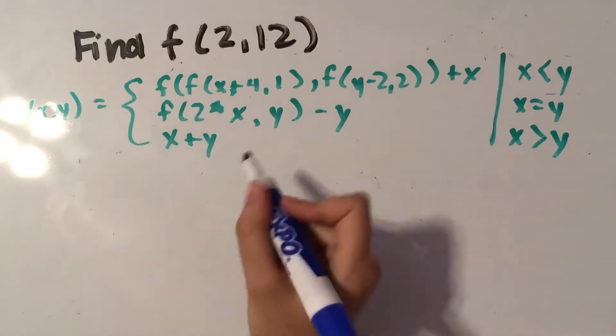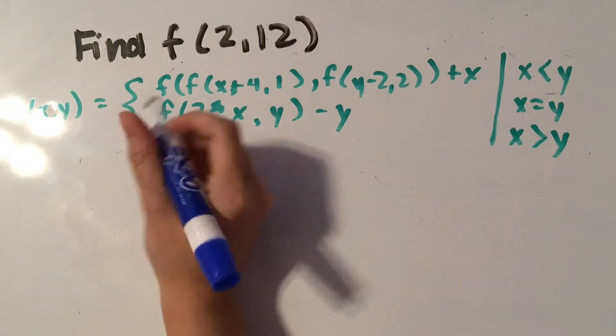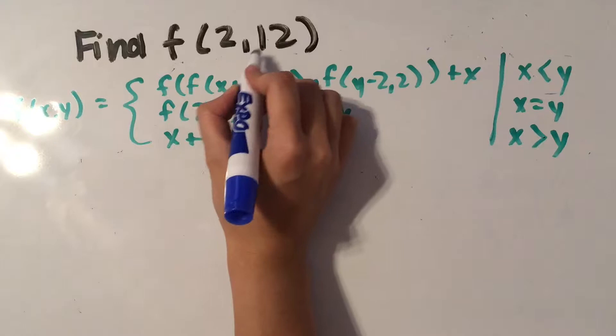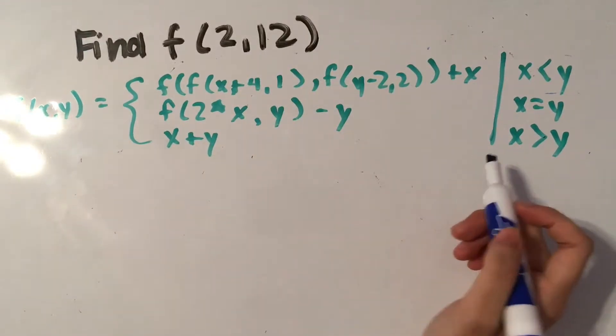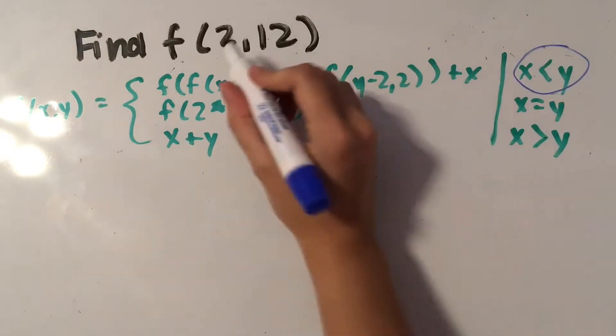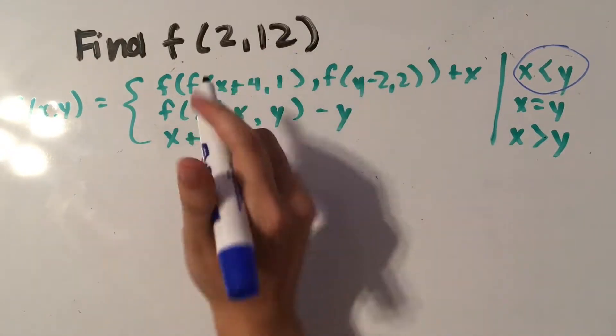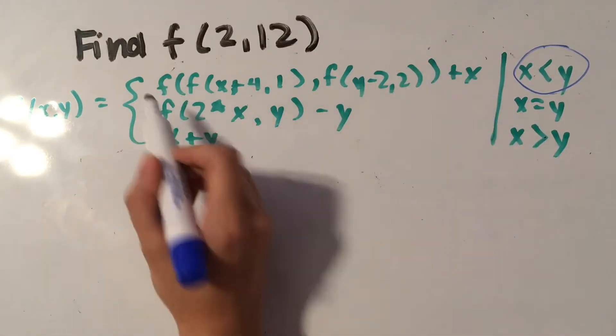So let's see if I can get through this without making any mistakes. We have find f of 2 comma 12, and we see that x is less than y, so we're going to follow this first equation up here.